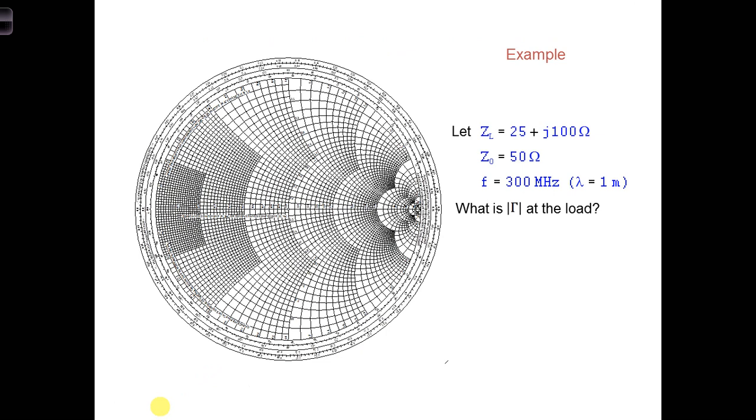Let's work through an example. Let's say we know ZO is 25 plus J100 ohms, we're given Z naught of 50 ohms. The frequency of operation is 300 megahertz and we are given the wavelength. We want to know what is the magnitude of the reflection coefficient at the load.